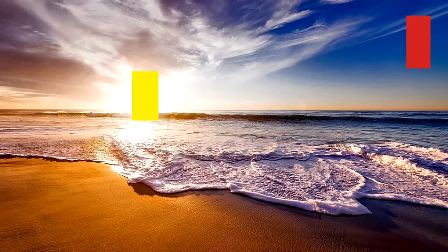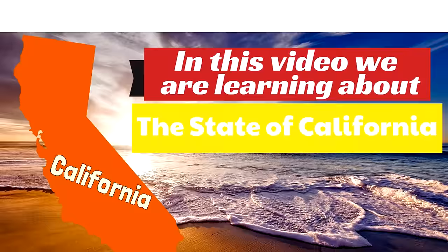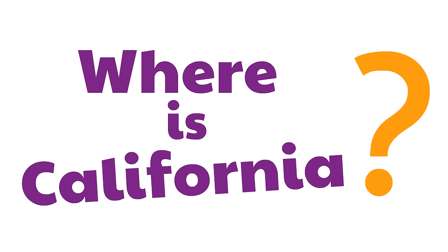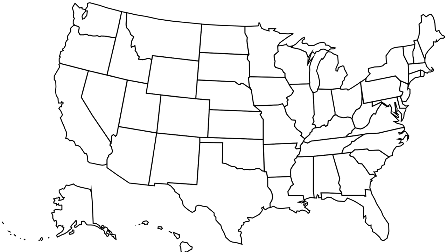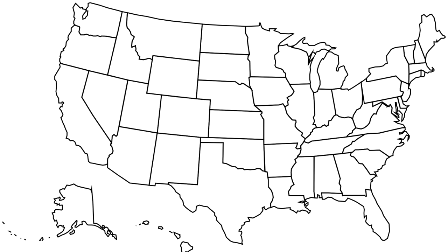Where is California? If you want to go to California, where exactly do you need to go? Here is a map of the United States. When you're looking for California, look for a big state — California is the third biggest state in the US. Do you see it? Right here is California.